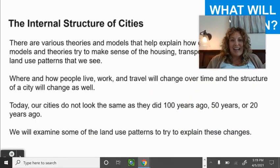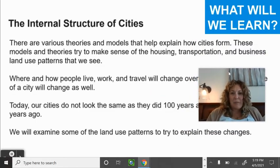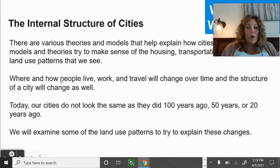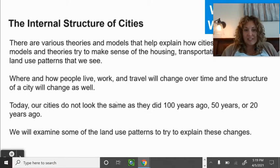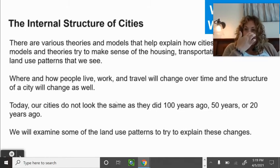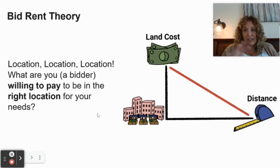There are many theories and models that help explain how cities form. They try to make sense of housing, transportation, business, and land use patterns. Where and how people live, work, and travel will change over time, and the structure of a city will change as well. Today our cities don't look the same as they did 150 or even 20 years ago.